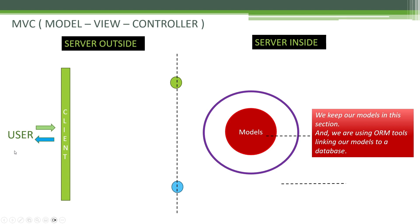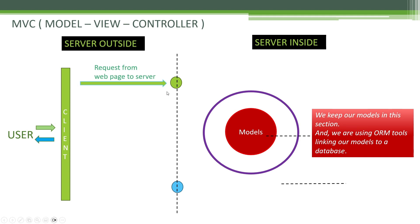Let's start by trying to send a request to the server. As you can see, 'request from webpage to server' — we send our request, for example typing www.argos.co.uk, so we are sending a request to the server to bring us the main page of the website. We send this request to the controller.